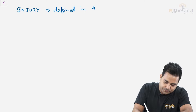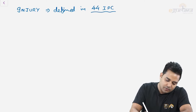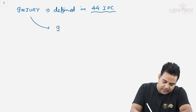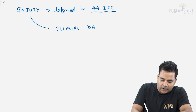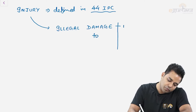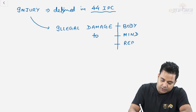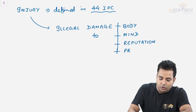Section 44 IPC. According to this definition, injury is defined as any illegal damage to a person in his body, or to a person's mind, or to his reputation, or to his property. So any illegal damage to a person in body, mind, reputation, and property is defined under Section 44 IPC.